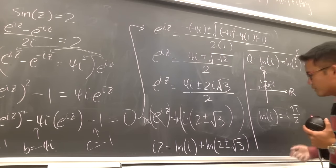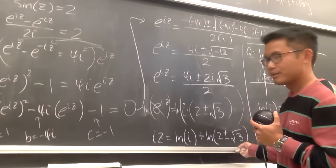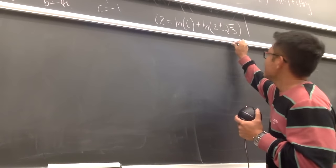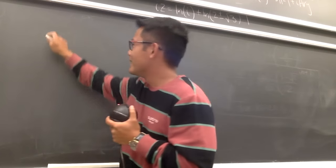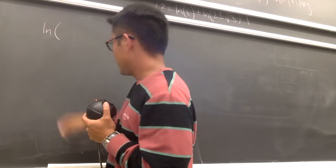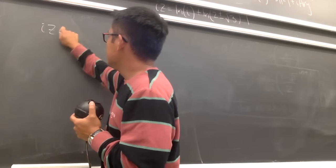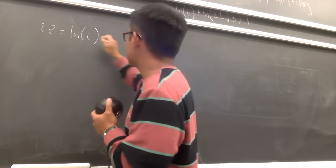Now substituting back: iz equals ln(i) plus ln(2 plus or minus square root of 3). We just found ln(i) equals i pi over 2, so iz equals i pi over 2 plus ln(2 plus or minus square root of 3).